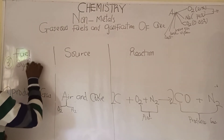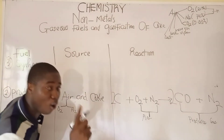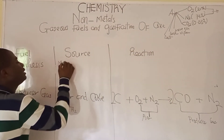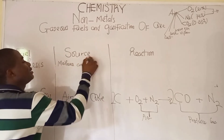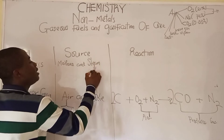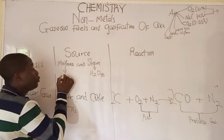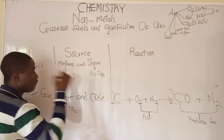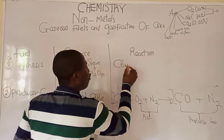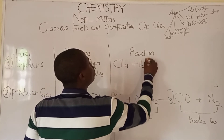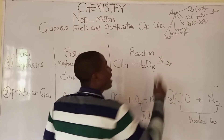Now let's talk about the third gaseous fuel: synthesis gas. Synthesis gas is made from methane (an alkane, chemical formula CH₄) plus steam (gaseous water, H₂O). So methane reacts with steam in the presence of a catalyst.